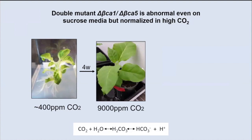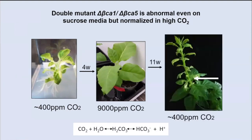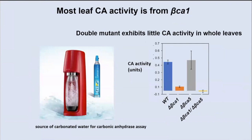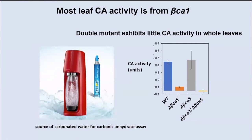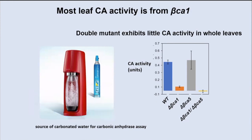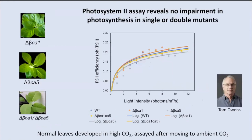If you transfer that plant back into low CO2, you end up with plants looking very abnormal again, though they do survive because they're being fed by leaves formed during the high CO2 period. Kevin then went on to assay carbonic anhydrase activity — he was having trouble getting carbonated water, so I had to bring in my SodaStream. When CA1 is knocked out, there's very little CA activity left; CA5 has less effect; but if you knock both out, there's very little CA activity.